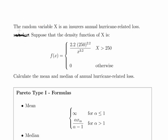Suppose that the density function of X is given by f(X) equal to 2.2 times 250 to the power of 2.2, divided by X to the power 3.2, where X is greater than 250, and 0 otherwise.